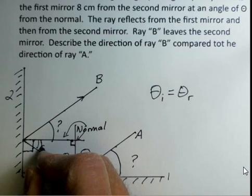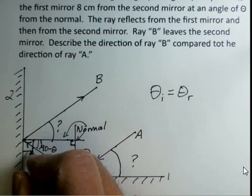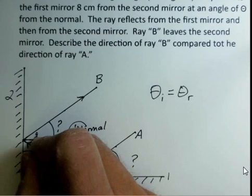And now we have another reflection taking place. This ray traveling from mirror one to mirror two has an angle of 90 minus theta with respect to this normal. Again, incoming angle equals outgoing angle. So this is 90 minus theta, the angle of ray B away from its normal.